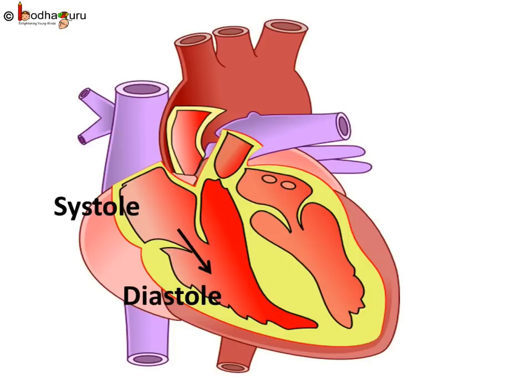And what is systole? Systole is the phase of the heartbeat when the heart muscle contracts. During systole of the atria, blood is pumped into the ventricles, and during systole of the ventricles, blood is pumped into the arteries. The time needed for atrial contraction, or systole, is around 0.11 to 0.14 seconds, but the contraction of the ventricles takes around 0.27 to 0.35 seconds.